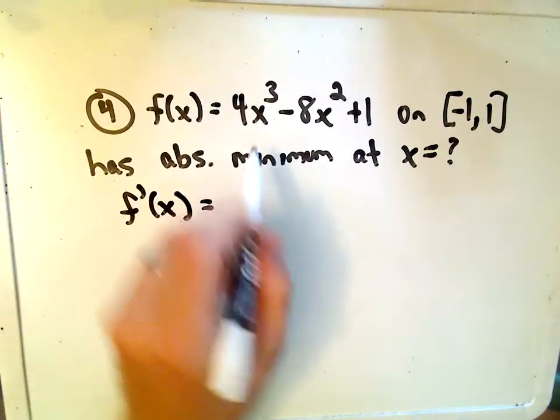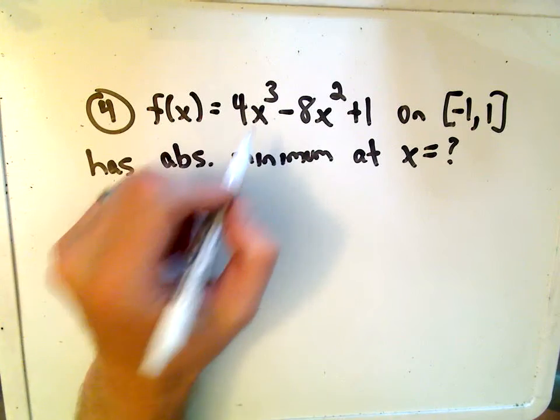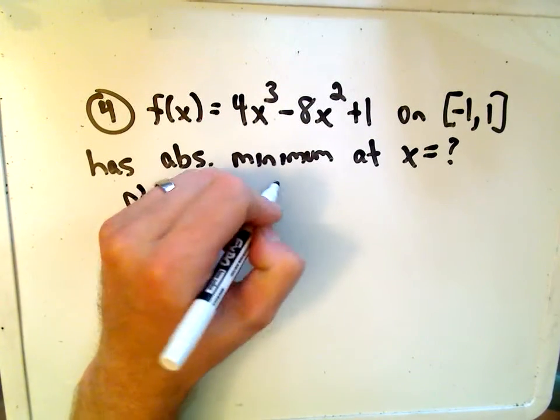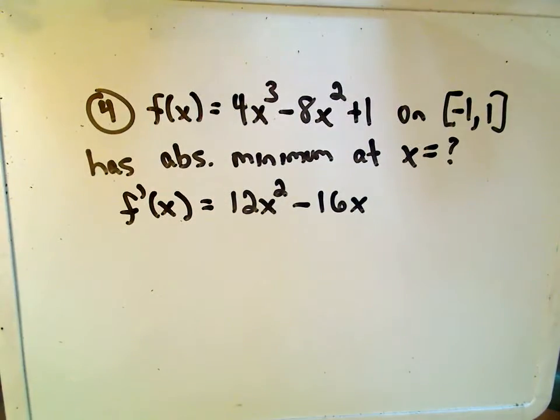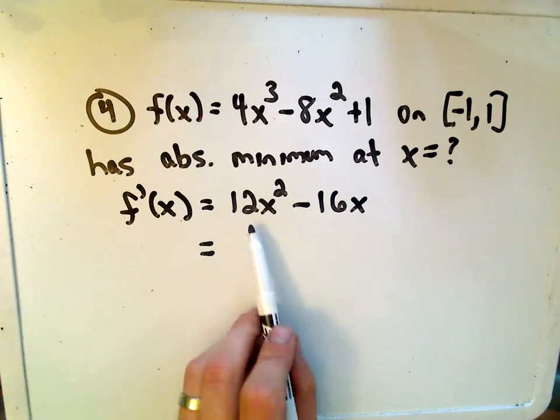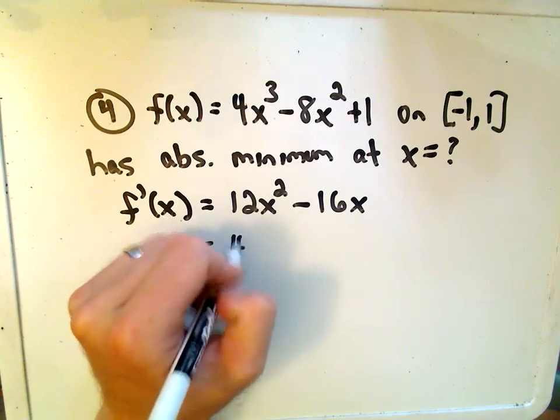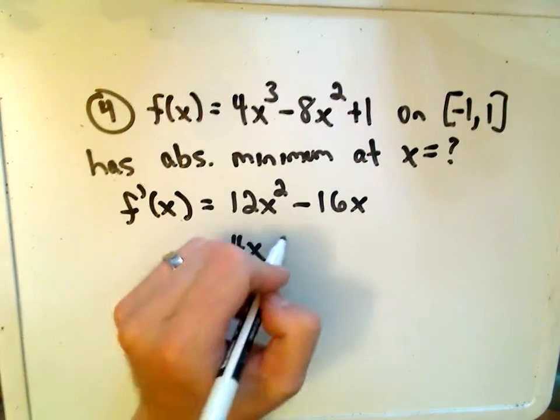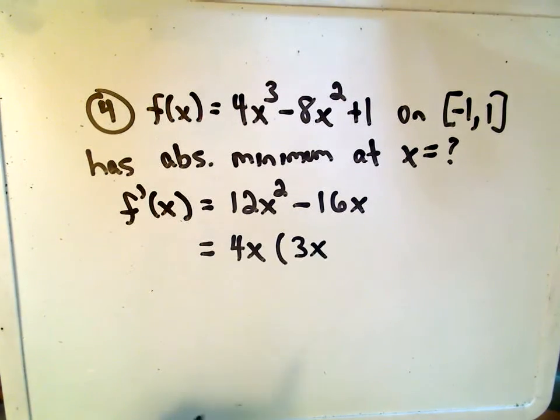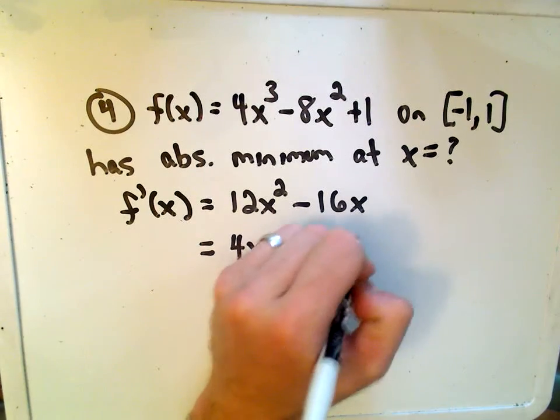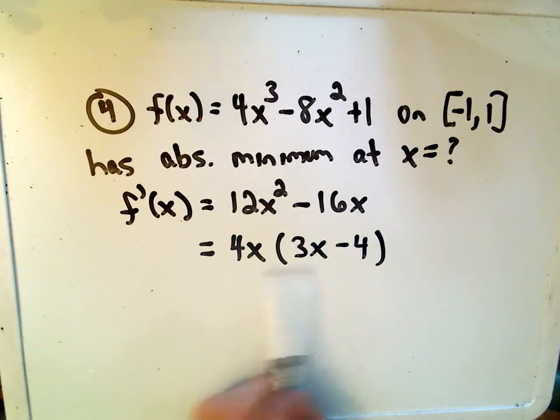So, the derivative of 4x to the third minus 8x squared will get 12x squared minus 16x. Let's see, how can we factor this? We can pull a 4x out of both of these parts. I would need a 3x for the first part, and it looks like I would need a minus 4 for the second part if I were to distribute.